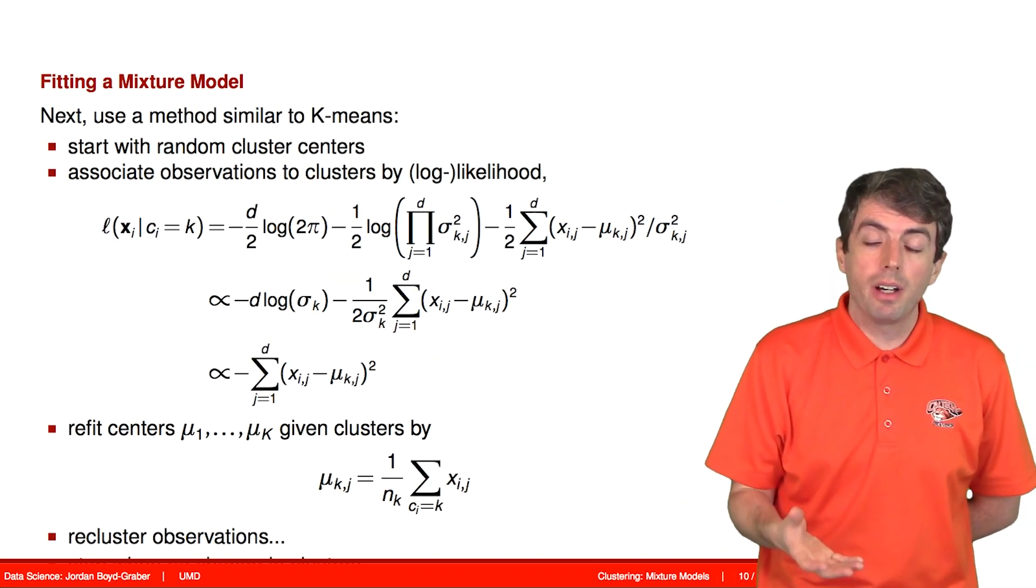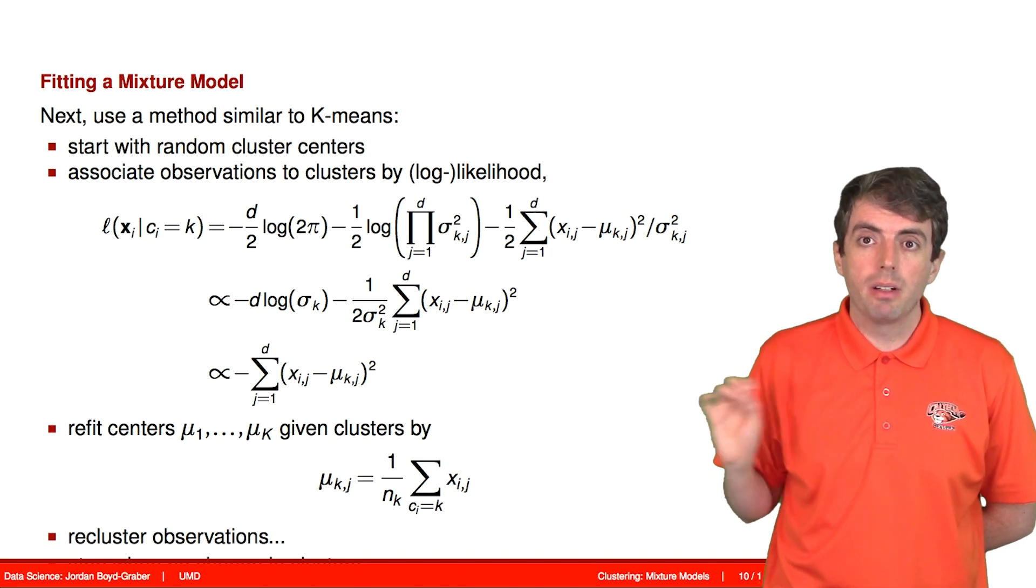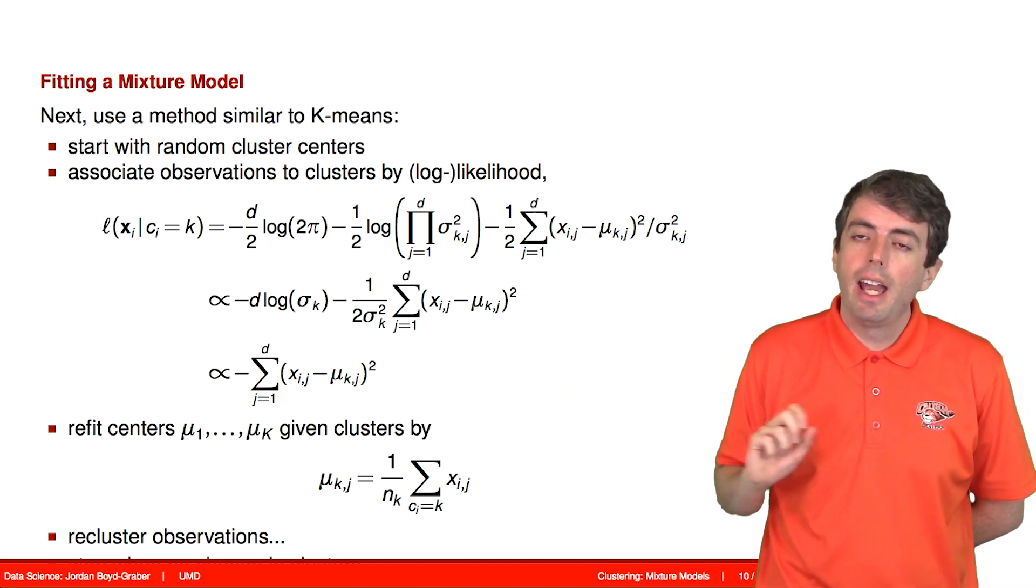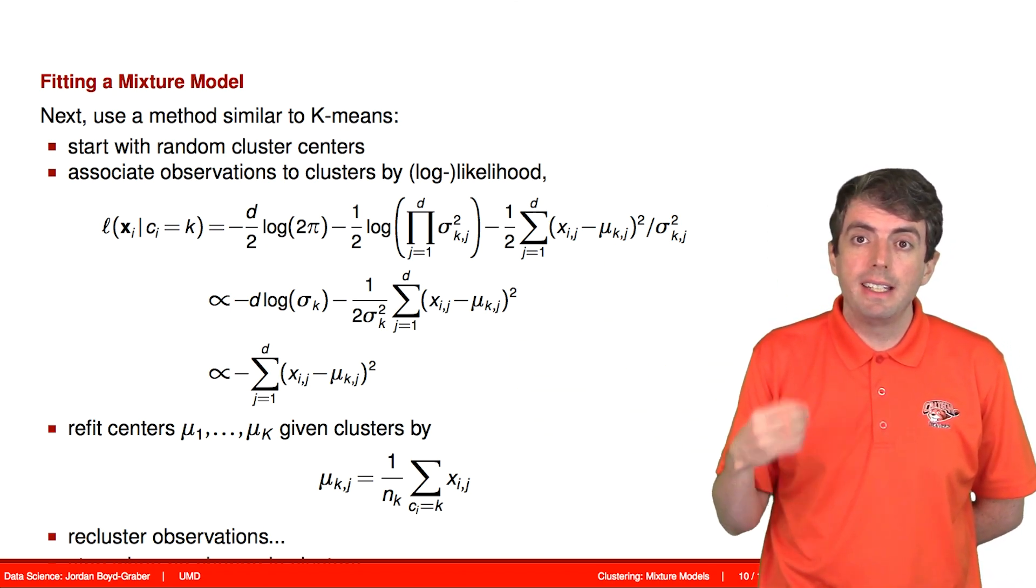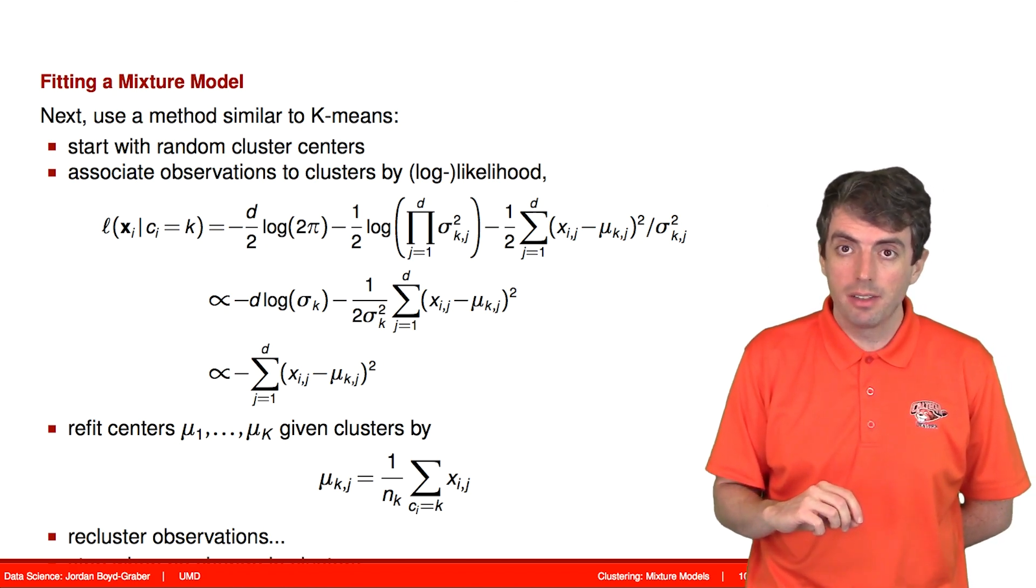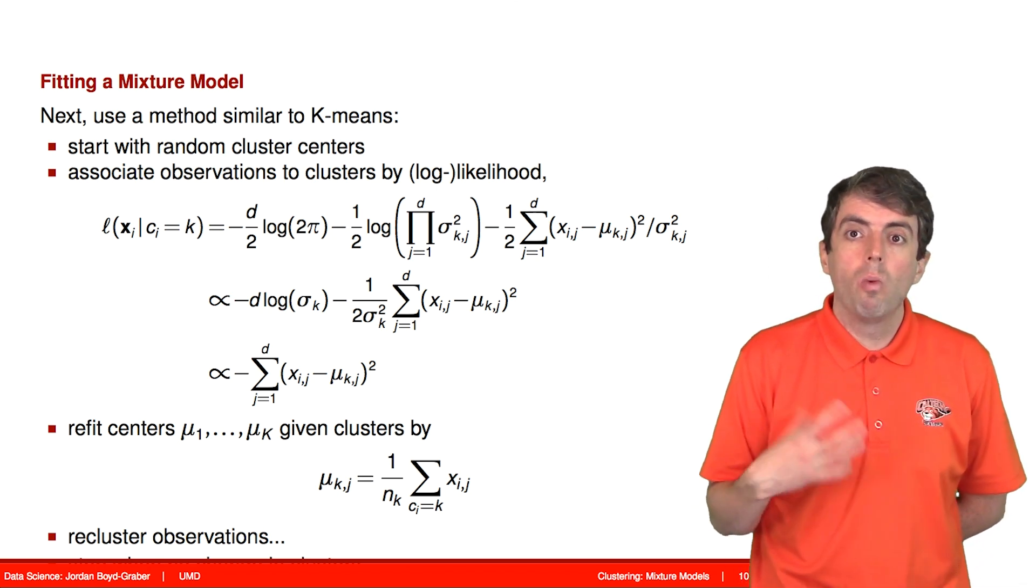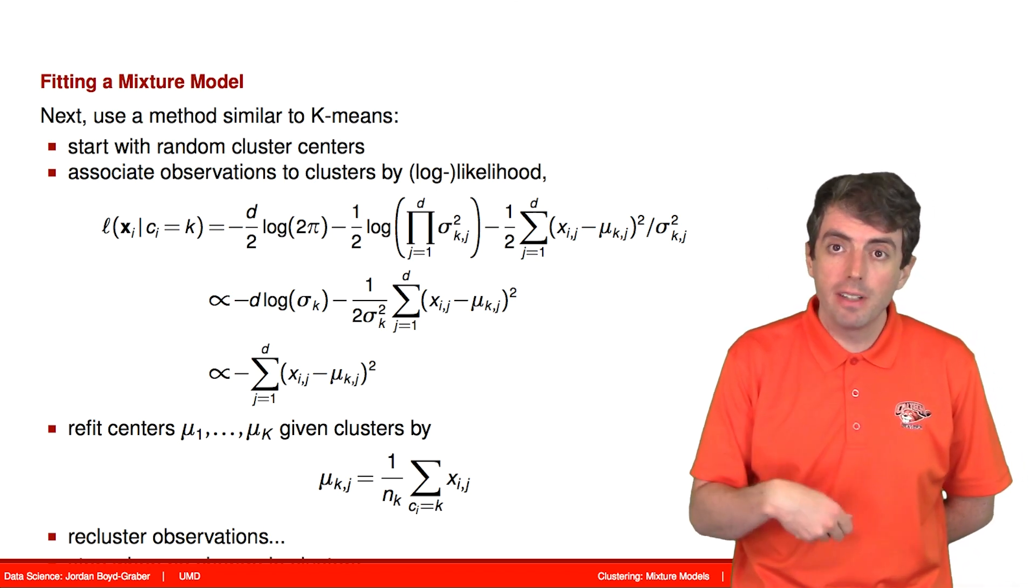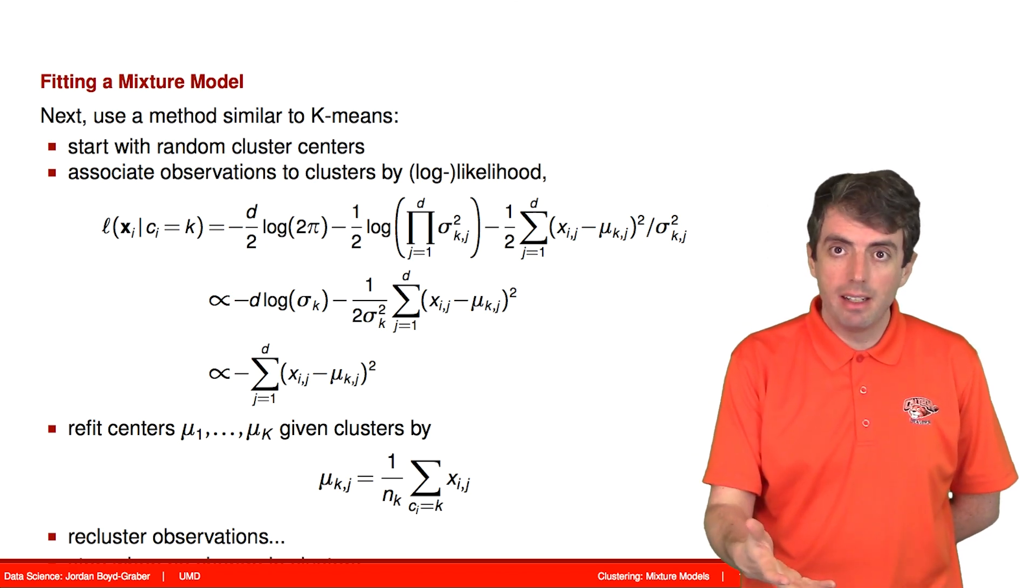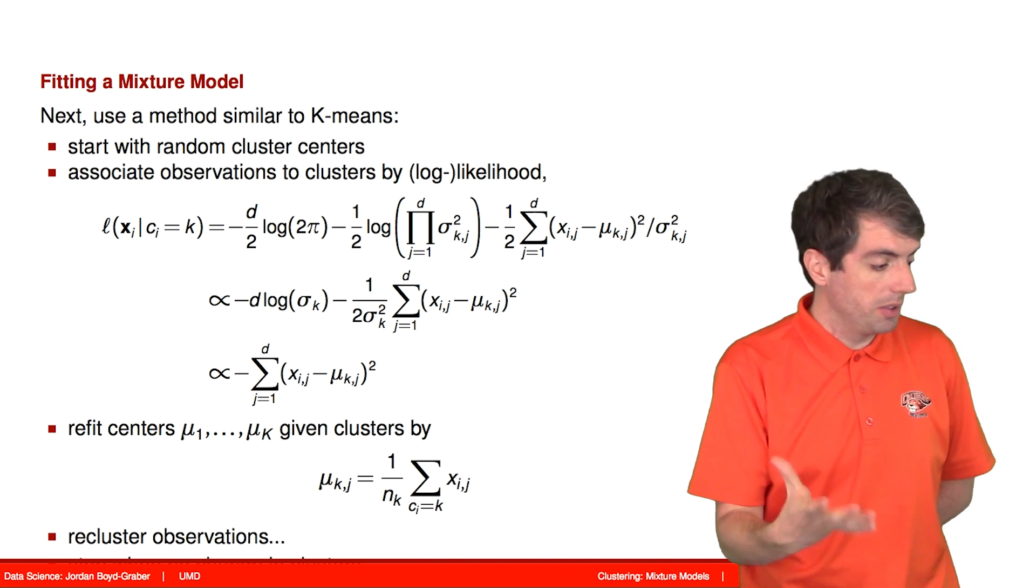What we're going to do is start off with something very similar to k-means. We're going to randomly place our means somewhere in the data, and then we're going to assign each point to one of the clusters. And the way that we're going to assign points to a cluster is based on the likelihood. What is the probability of observing that point given that cluster's mean? And that's just a normal distribution.